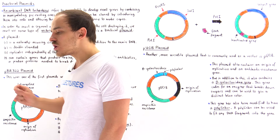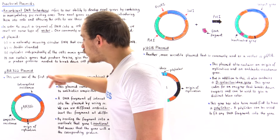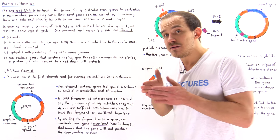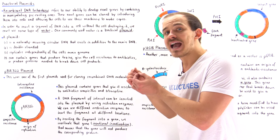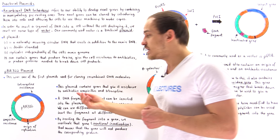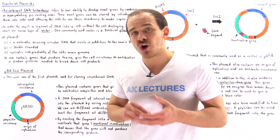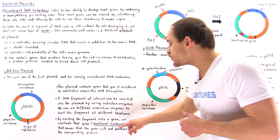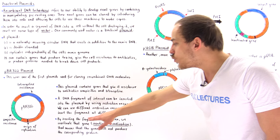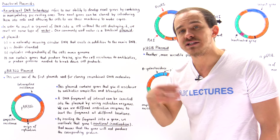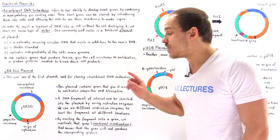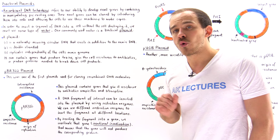If we use a restriction enzyme that cuts along a gene and insert a DNA molecule into the middle of that gene, it will essentially inactivate that gene, and the gene will no longer be able to produce the protein it encodes. This process is known as insertional inactivation. By inserting the fragment into a gene, we inactivate that gene so it will not produce the corresponding protein.